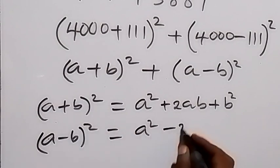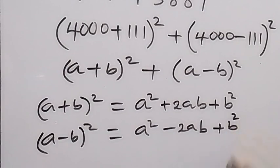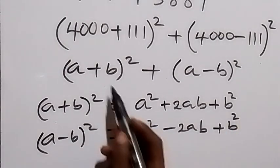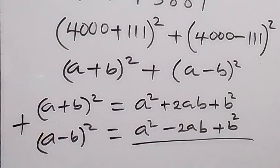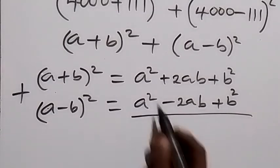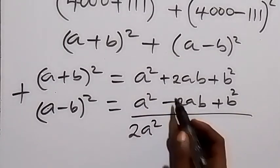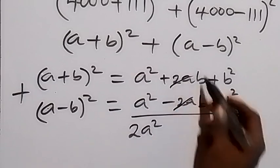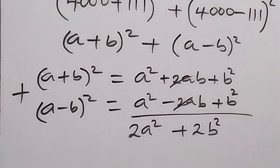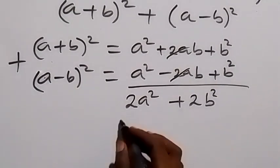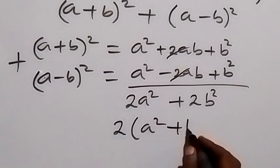Minus 2ab plus b squared. Since we are adding the two together, the addition gives us a squared plus a squared, which is 2a squared. When we add the middle terms, the 2ab terms cancel out, and we have plus 2b squared. We have 2 as a common factor, so let's take it out: 2 times (a squared plus b squared).